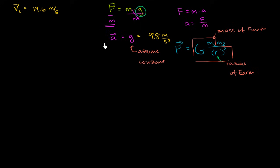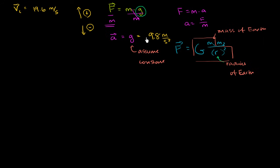I want to be clear that these are vector quantities. When we start throwing stuff up in the air, the convention is that if something is moving up, we give it a positive value, and if something is moving down, we give it a negative value. For an object in free fall, gravity accelerates it downwards, so little g, if we want to give its direction, is negative 9.8 meters per second squared.